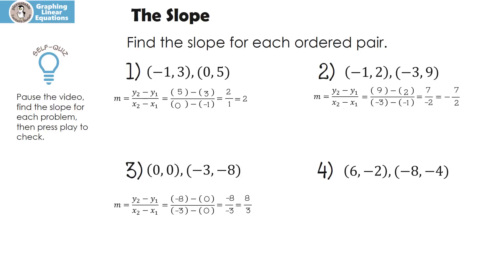Let's look at our last one. Here's my formula with parentheses for substitution. Y2 minus y1 over x2 minus x1: negative four minus a negative two is negative two, and negative eight minus six is negative fourteen. Always reduce: negative two over negative fourteen reduces to one-seventh.